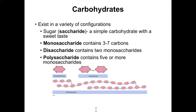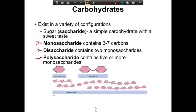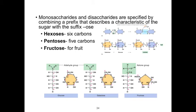Here's a summary of the terminology. Sugar is a saccharide — a simple carbohydrate with a sweet taste. We have monosaccharides, disaccharides, and polysaccharides. Monosaccharides and disaccharides are specified by combining a prefix describing the sugar's characteristic with the suffix '-ose.' So hexoses are six-carbon sugars, pentoses are five-carbon sugars, and we might see fructose, sucrose, or galactose. Fructose is the sugar found in fruit.